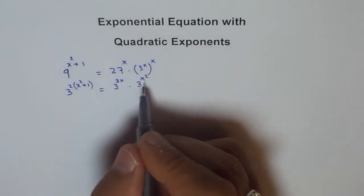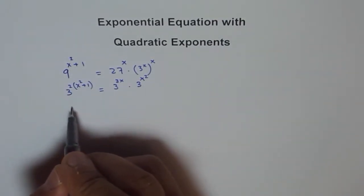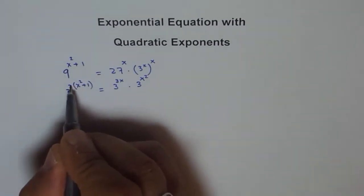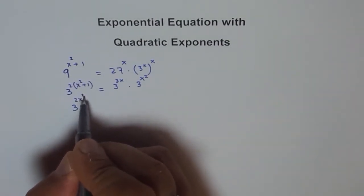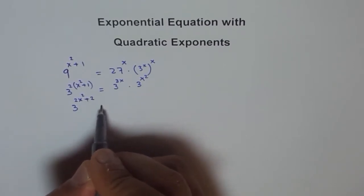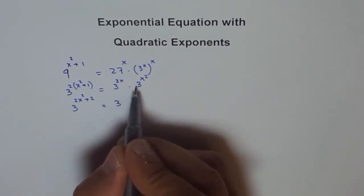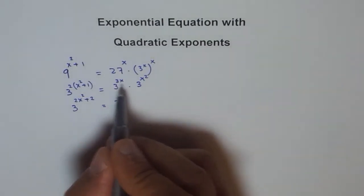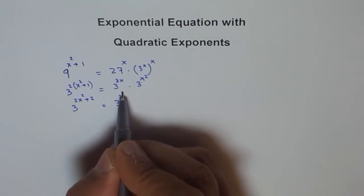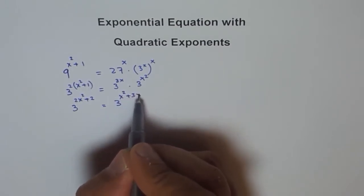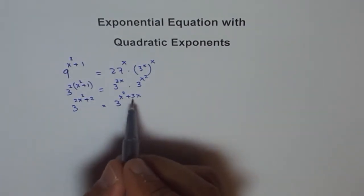That is what we get on the right hand side. Now, we can combine the terms and say 3 to the power of 2x squared plus 2, equals 3 to the power of — when you multiply with the same base, you add the exponents — so we get x squared plus 3x on the right.